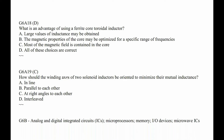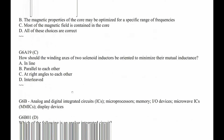G6A19. How should the winding axis of two solenoid inductors be oriented? Oriented to minimize their mutual inductance — perpendicular to each other. So that is C, at right angles to each other.